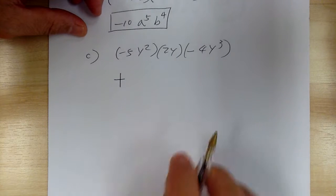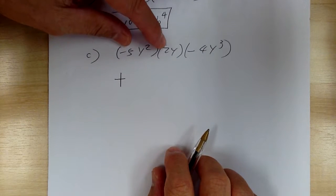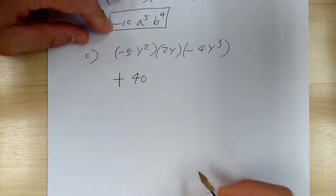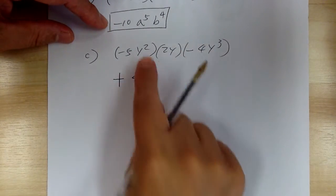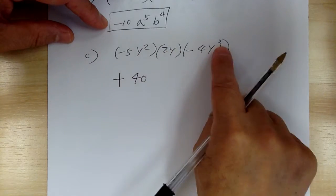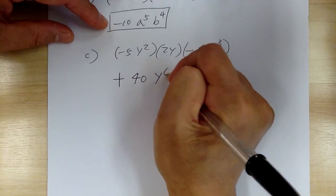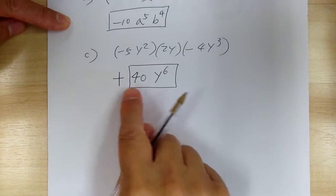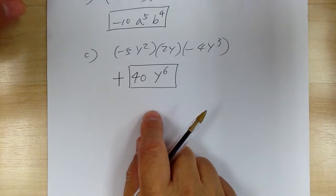Then you take care of the number after that. So 5 times 2 is 10 times 4 is 40. Then after that, you go down the alphabet. So you got y squared, y, and y to the 3. So 2 plus 1 plus 3 gives you 6. So it will be y to the 6. When you box your answer, you don't have to box the positive, because that means it's positive already.